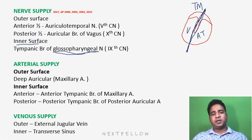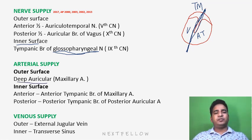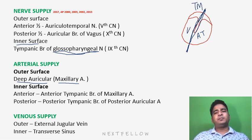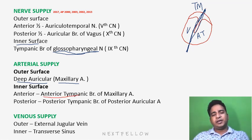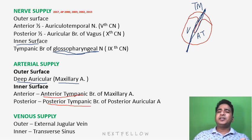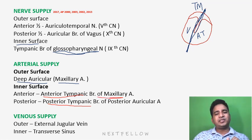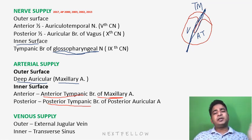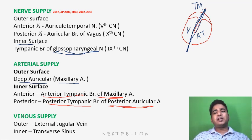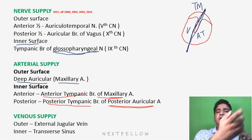What is the arterial supply of the tympanic membrane? The outer surface is supplied by the deep auricular artery, which is a branch of the maxillary artery. For the inner surface, the anterior half is supplied by the anterior tympanic branch and the posterior half by the posterior tympanic branch. The anterior tympanic branch is a branch of the maxillary artery, while the posterior tympanic branch is a branch of the posterior auricular artery supplying the posterior half facing the middle ear.